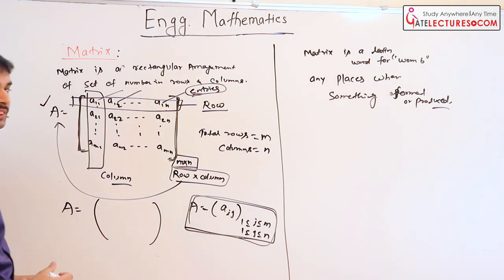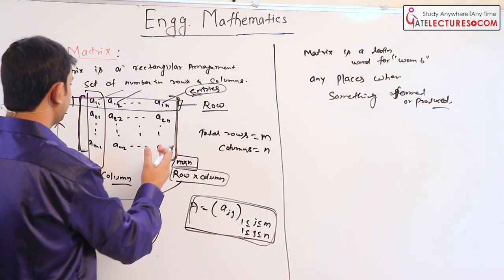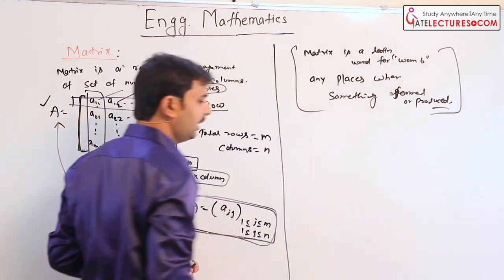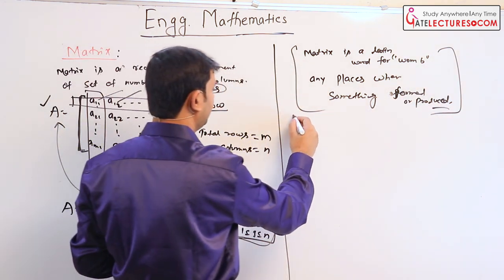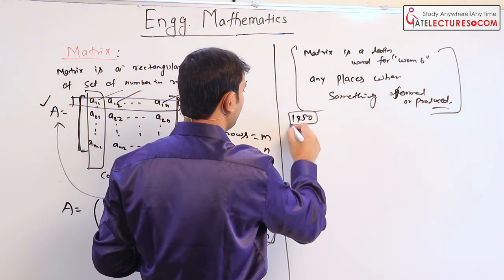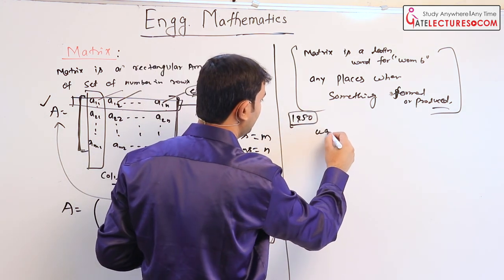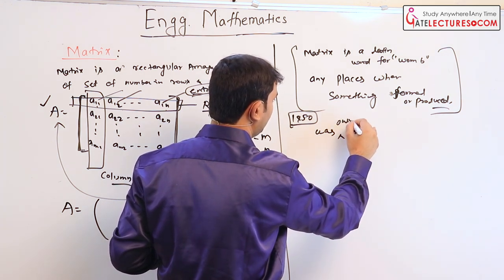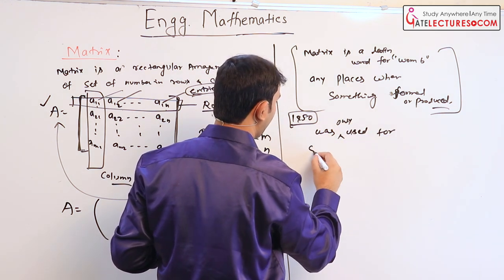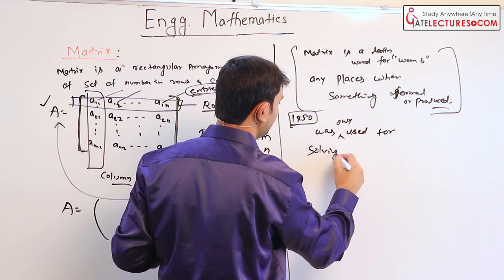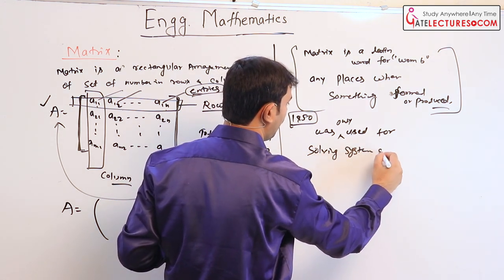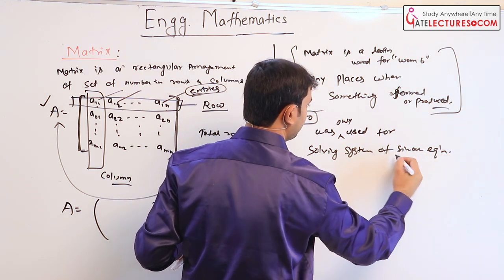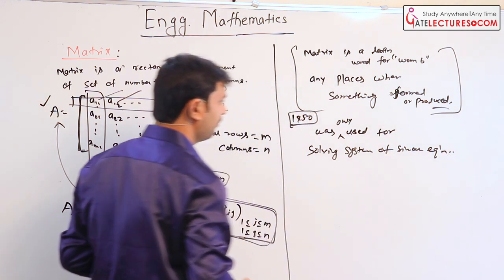So a place where something is formed or produced is known as a matrix. Actually, in later 1850s, this theory was only used for solving system of simultaneous equations.